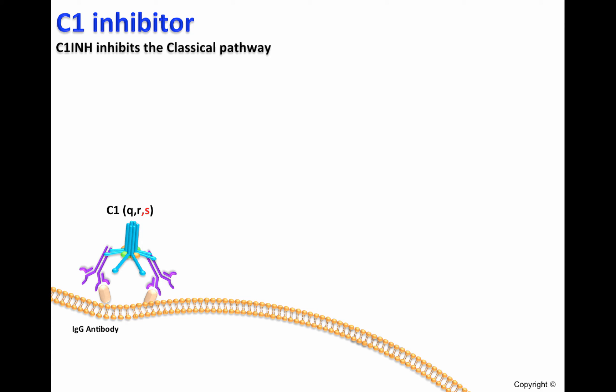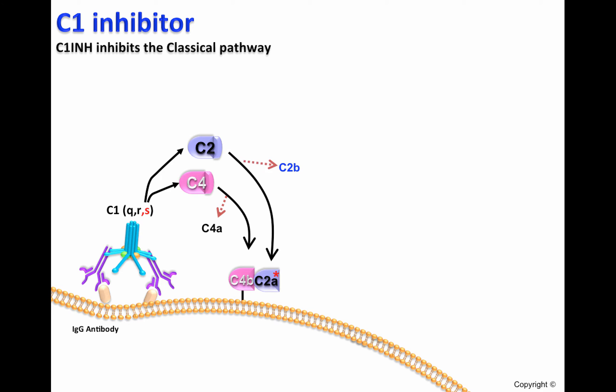As has been shown in previous videos, when C1Q binds to IgG found on cell surfaces, C1S will be able to cleave C4, leading to the deposition of C4B on the cell surface. In addition, C1S will cleave C2, generating C2A and C2B. When C2A binds to C4B bound to a cell surface, it will generate the C3 convertase, C4B-C2A.